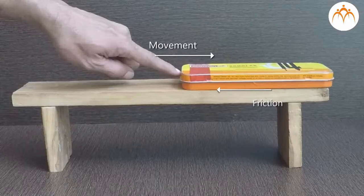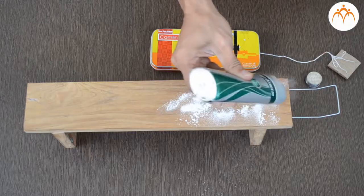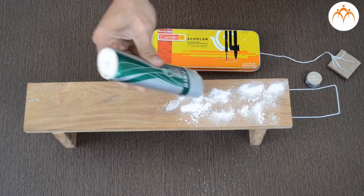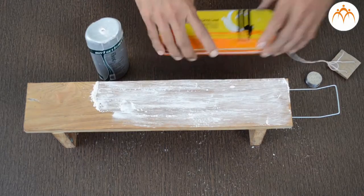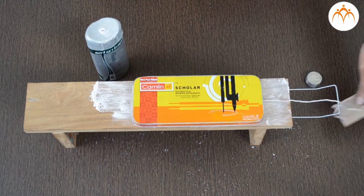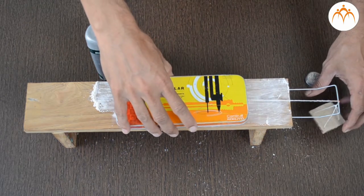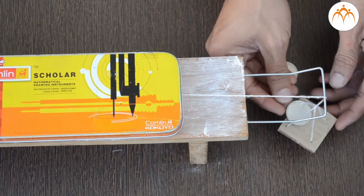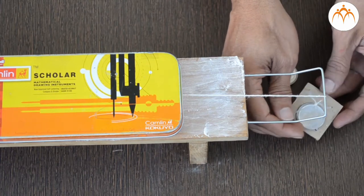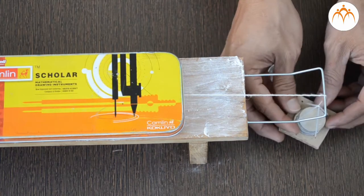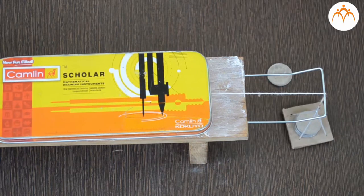How can I reduce the friction between compass box and platform? Think about it. Let us sprinkle some talcum powder on the surface. How many coins will be required to move the compass box now? Surface is smoother. Less coins are needed to move the same compass box. It required only 6 coins to move instead of 8 coins.